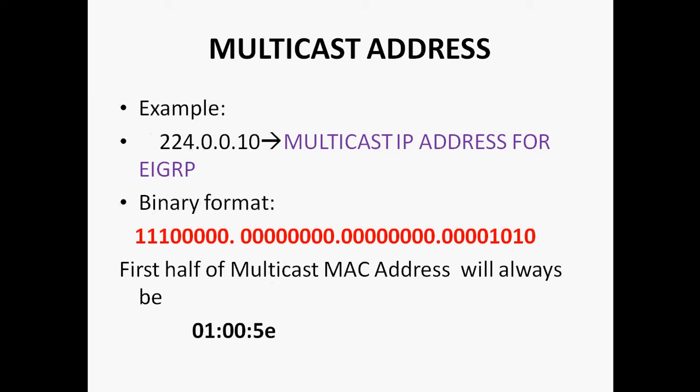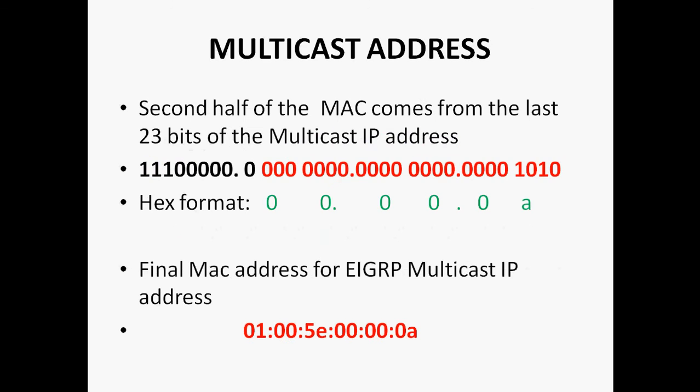First of all, you have to convert this IP address into binary format. The red color numbers indicate the binary format for 224.0.0.10. Next, the first half of your multicast MAC address will always be 01-00-5E. The MAC address is a 48-bit address, and the first 24 bits should always be 01-00-5E.